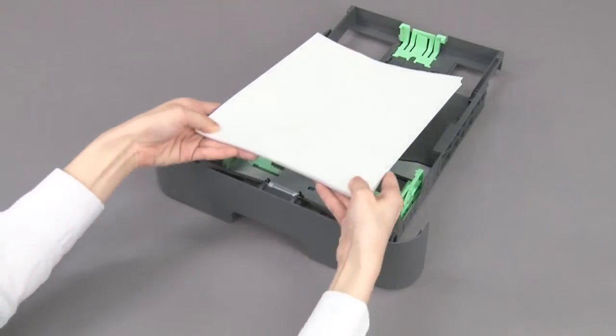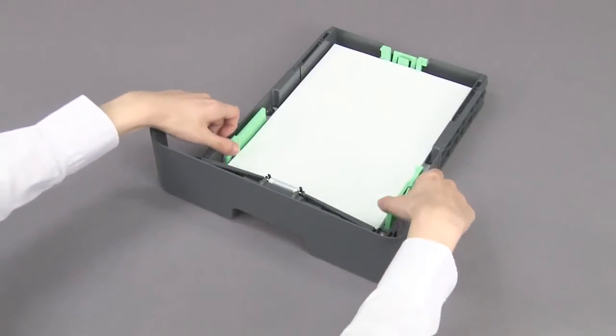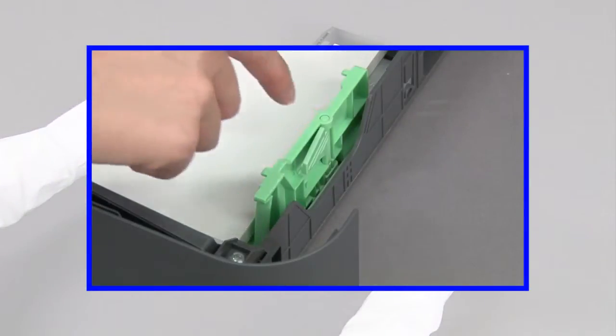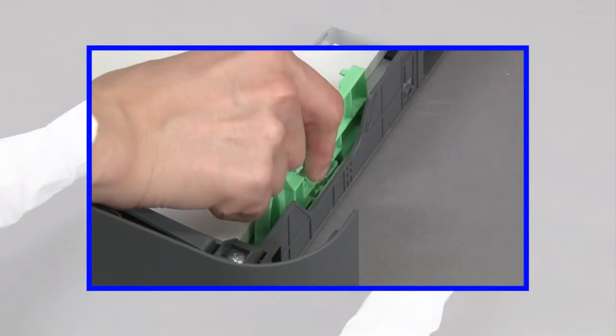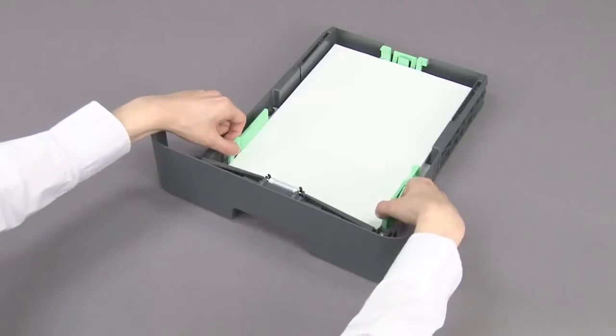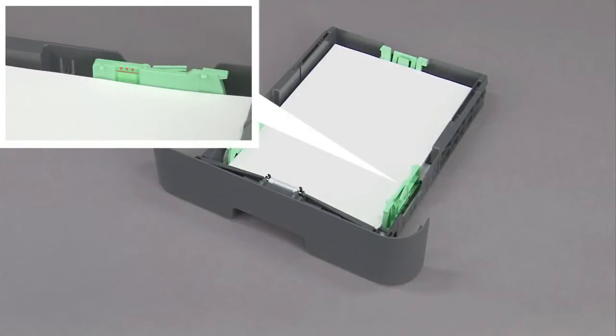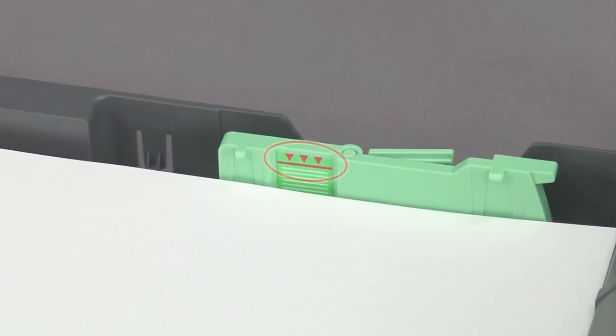Load paper with the printing surface face down in the paper tray. Adjust the paper guides. Check that the paper is flat in the tray and below the maximum paper mark.